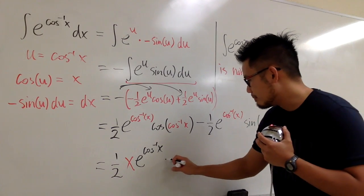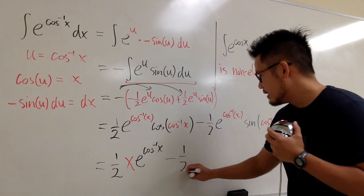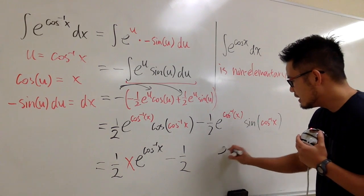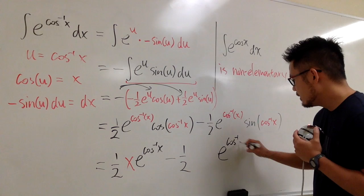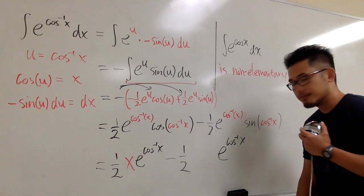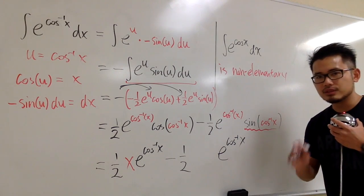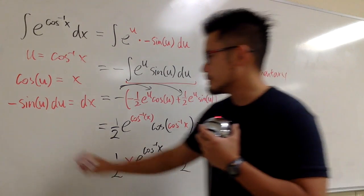There is one little touch that we are going to do. We can write them with square root, or regular algebraic expressions. Cosine and inverse cosine, they cancel each other out. We will just have x. What's the sine of inverse cosine x? Let's do that real quick.